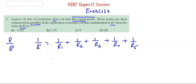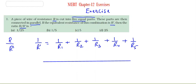Now R1, R2, R3, R4, R5 — what are their values? Let's read the question again. A piece of wire of resistance R is cut into 5 equal parts. So each part has resistance R/5. Therefore R1 = R2 = R3 = R4 = R5 = R/5.